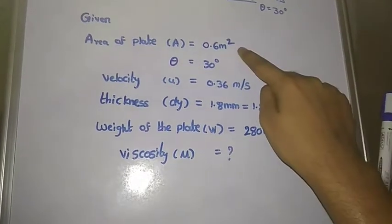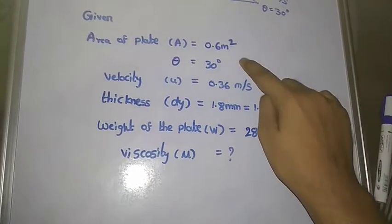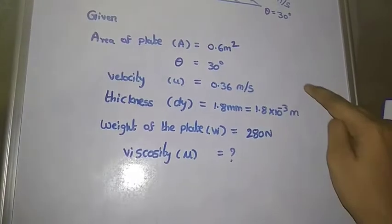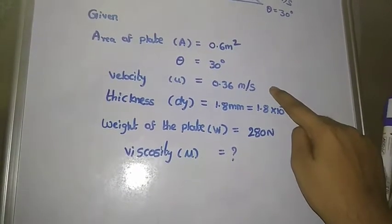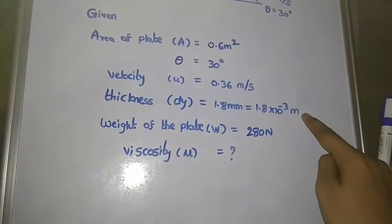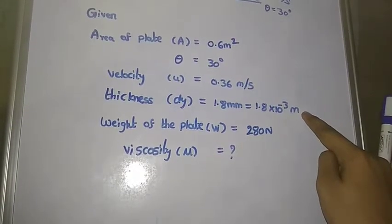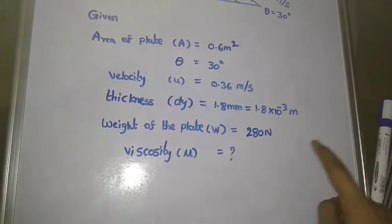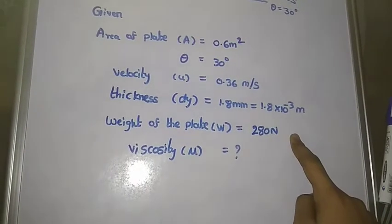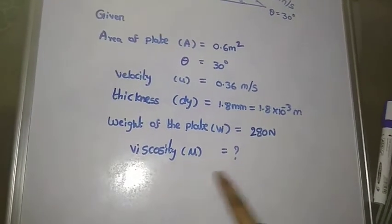Given: area of the plate A = 0.6 m², angle θ = 30°, velocity u = 0.36 m/s, thickness dy = 1.8 mm = 1.8 × 10⁻³ m, and weight of the plate W = 280 N. We would like to find the viscosity μ.